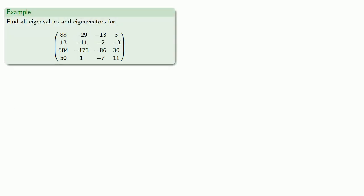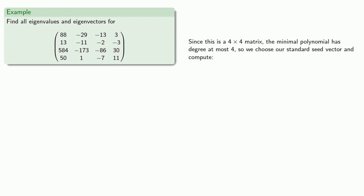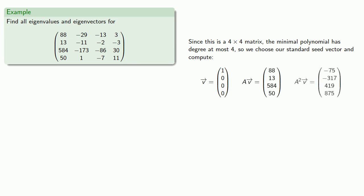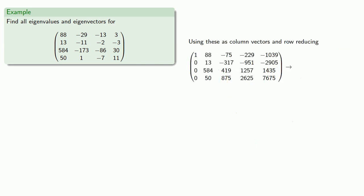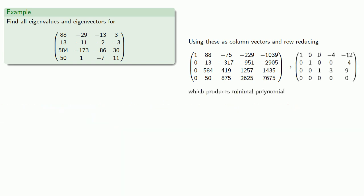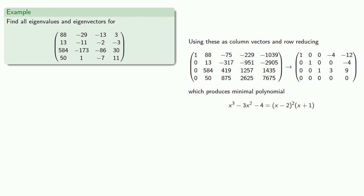Here's a rather horrifying matrix. Since this is a 4×4 matrix, the minimal polynomial has degree at most 4. We'll choose our standard seed vector and compute v, Av, A²v, A³v, and A⁴v. Using these as column vectors and row reducing gives us our minimal polynomial. We find eigenvalues lambda equals negative 1 and lambda equals 2. Once we know the eigenvalues, we can find the corresponding eigenvectors.